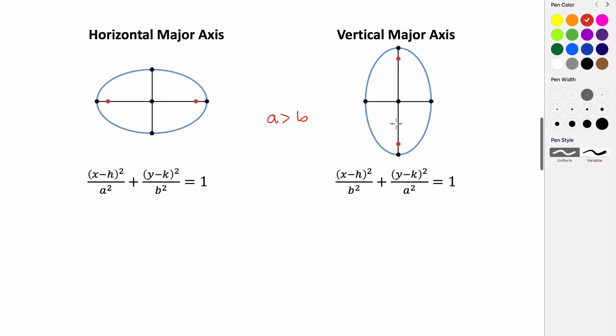If it has a vertical major axis, meaning your vertical axis is longer than your horizontal axis, then that means the value of a, again which is larger, is going to be under our y quantity.